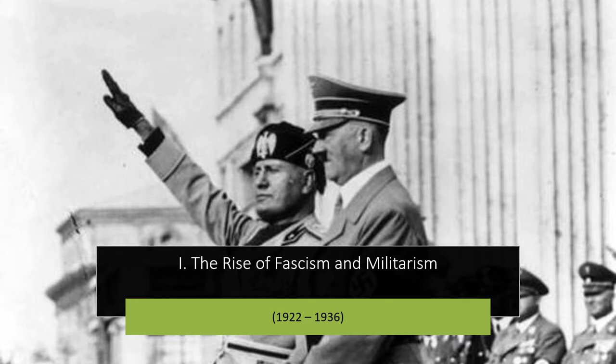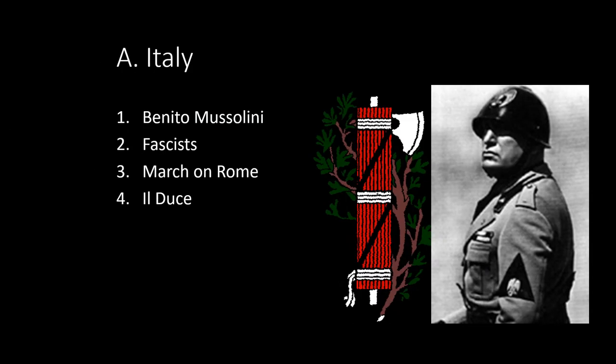The rise of fascism and militarism, 1922 through 1936. From 1922 through 1936, the world saw the rise of fascism and totalitarian dictators in Italy, the Soviet Union, Germany, and Japan. Before the war, Italy was denied territorial gains in the Versailles Treaty, the cost of living went up 500% between 1914 and 1919, unemployment was rising, and there was social unrest and fear of communists. Benito Mussolini, a former newspaper editor, promised to rescue Italy by reviving the economy and rebuilding the armed forces. At first, he failed to gain support.